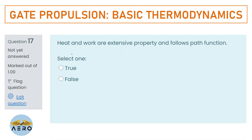Predict true or false: Heat and work are extensive properties and follow path functions. Both statements are correct, because both heat and work depend on the process they follow — they are path functions. The right option is option 2.